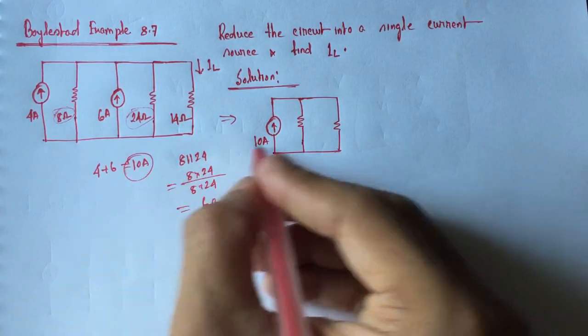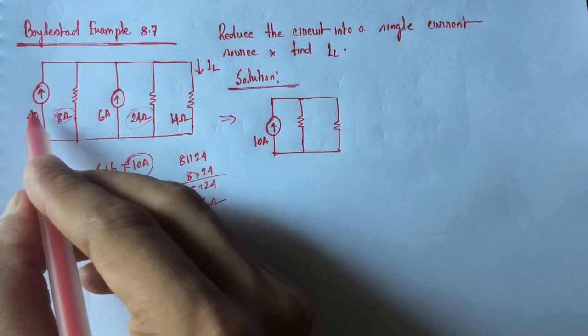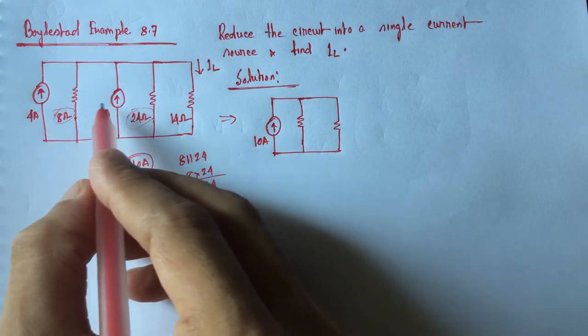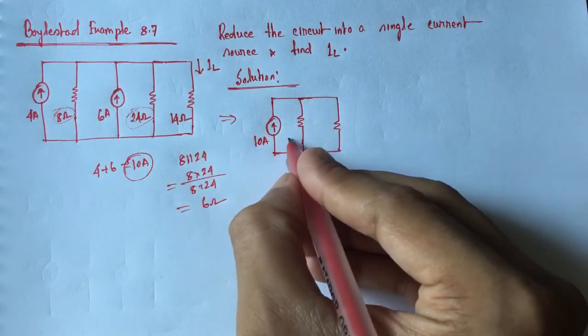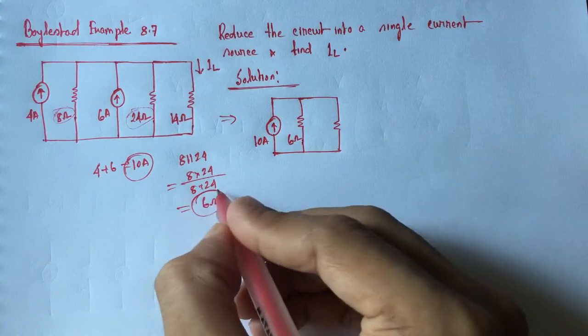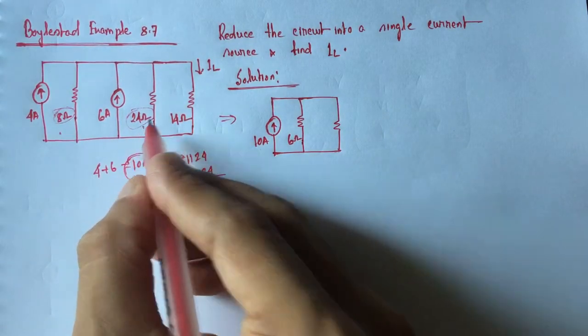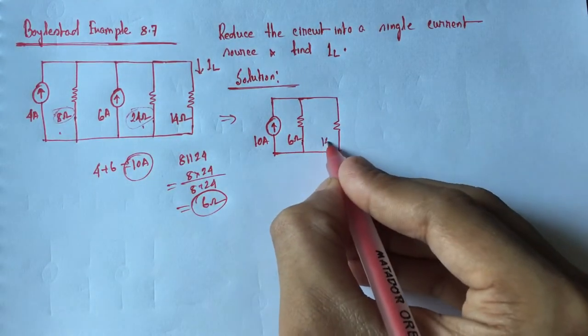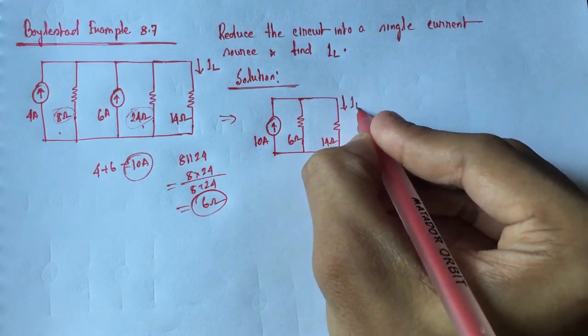From this 10 ampere, this is upward since the direction of these two current sources is upward. So this is 10 ampere and this is 6 ohm, which is the equivalent resistance from 8 ohm and 24 ohm. And this is 14 ohm, IL.